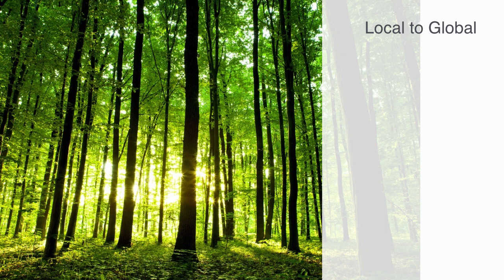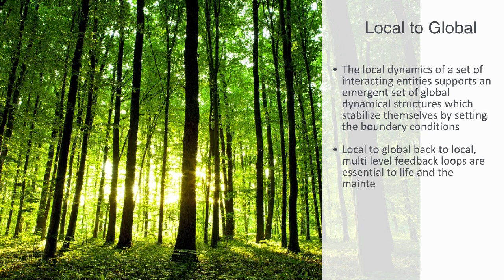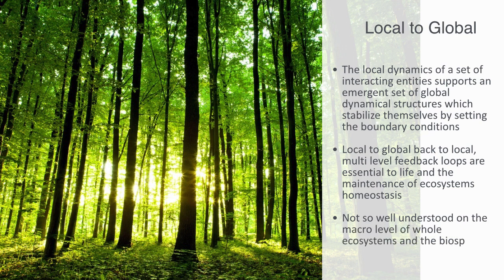To properly understand and manage an ecosystem like a forest, we must be knowledgeable about the trees as populations, but we must also study the forest as a whole ecosystem. Within these ecosystems, the local dynamics of a set of interacting agents support an emergent set of global dynamical structures which stabilize themselves by setting the boundary conditions within which the local components operate. These global structures can reach down to their own physical basis of support and fine-tune them in furtherance of their own global ends. Such local-to-global-back-to-local multi-level feedback loops are essential to life and the maintenance of ecosystem homeostasis, though this is not so well understood on the macro level of a whole ecosystem and the biosphere — an idea captured in the Gaia hypothesis.